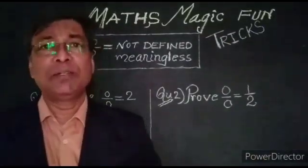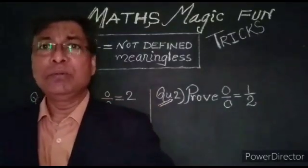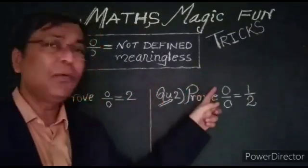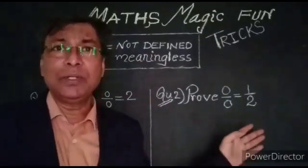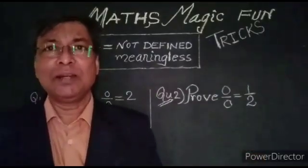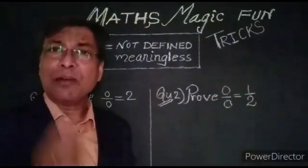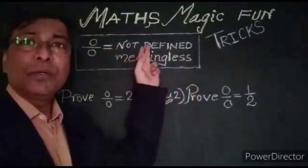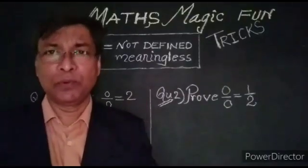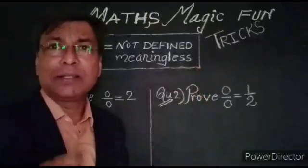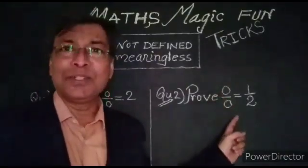In school and colleges, we have learnt that 0 upon 0 is not definable or meaningless. Though theoretically we can prove 0 upon 0 is equal to 2, or 0 upon 0 is equal to half — though it is scientifically and according to mathematics wrong — but for fun and entertainment, we can show that 0 upon 0 is equal to 2 or equal to half. At the end of this video, I'm going to show you scientific proof that 0 upon 0 is not definable or meaningless. But just for fun and entertainment, now I will prove 0 upon 0 is equal to 2 and 0 upon 0 is equal to half.